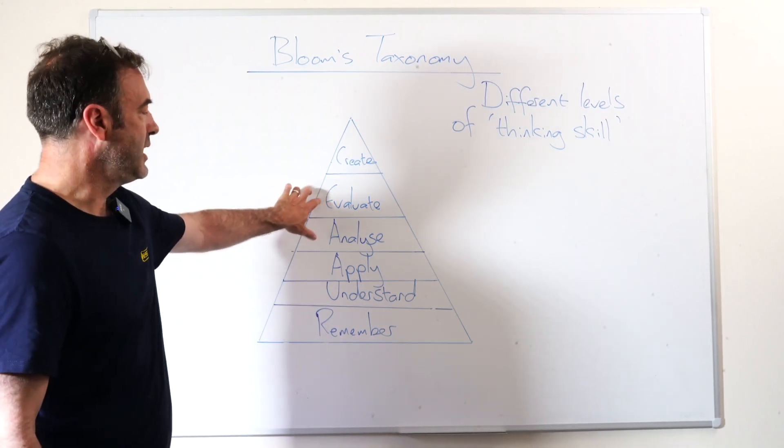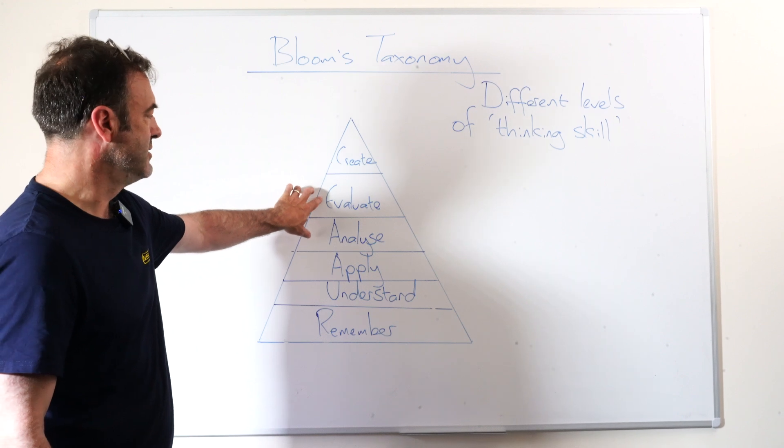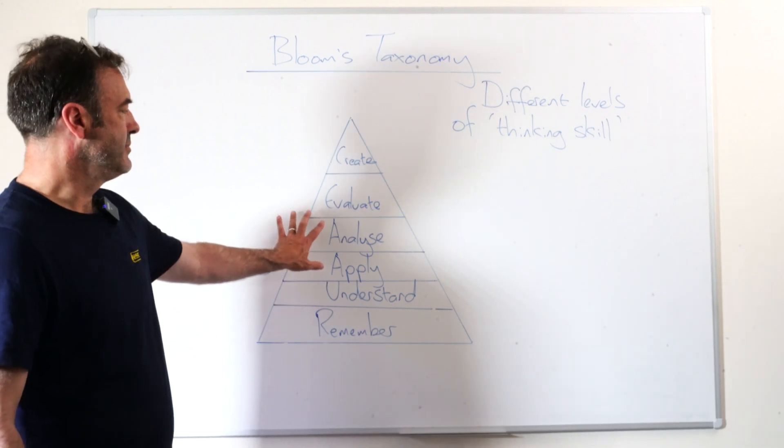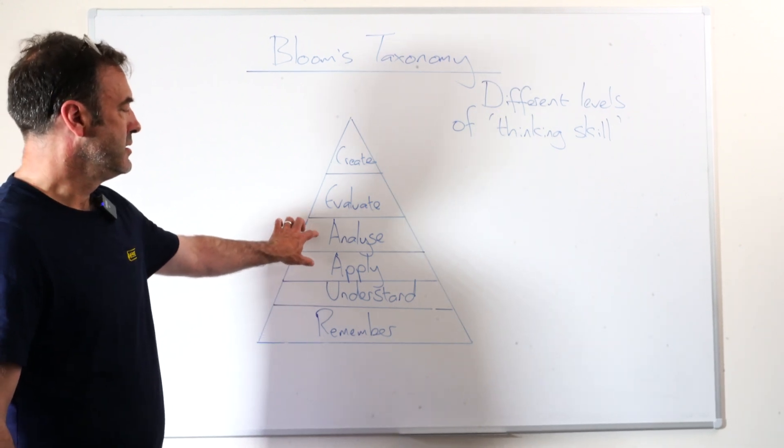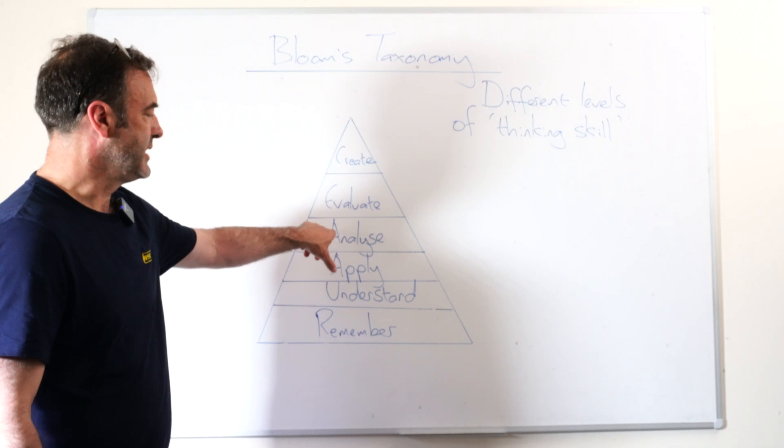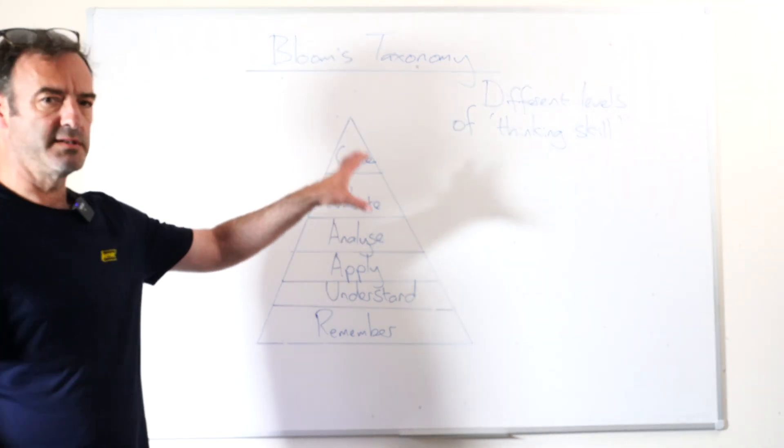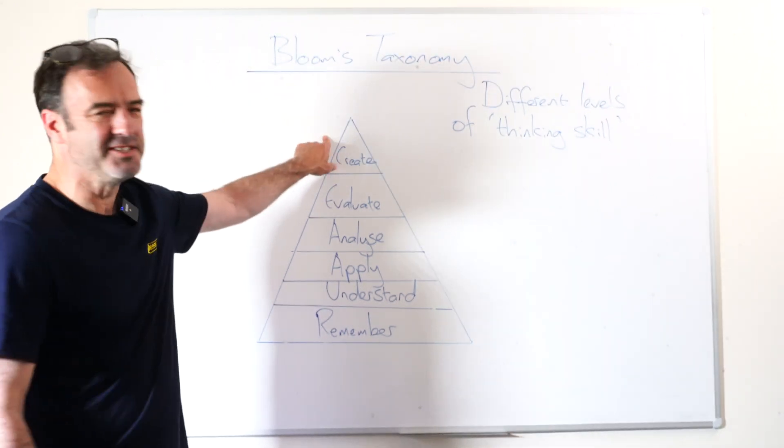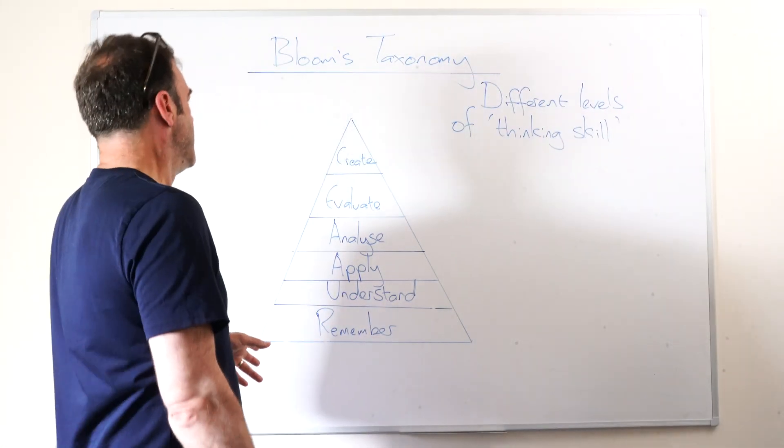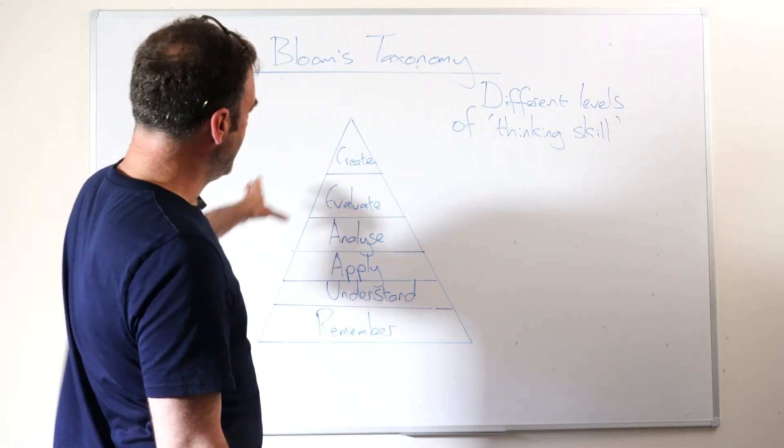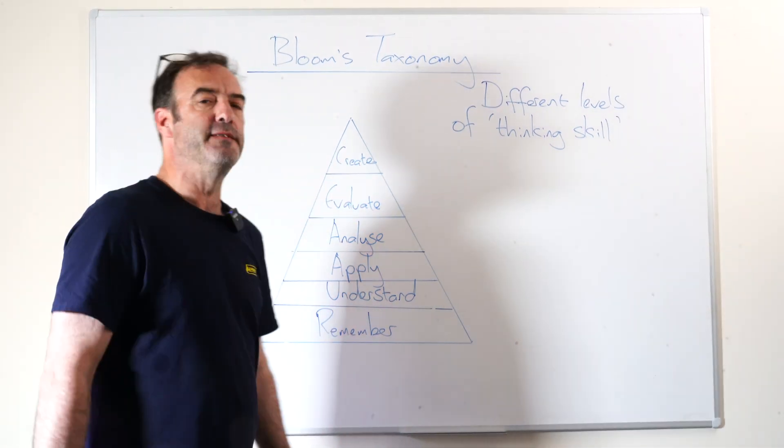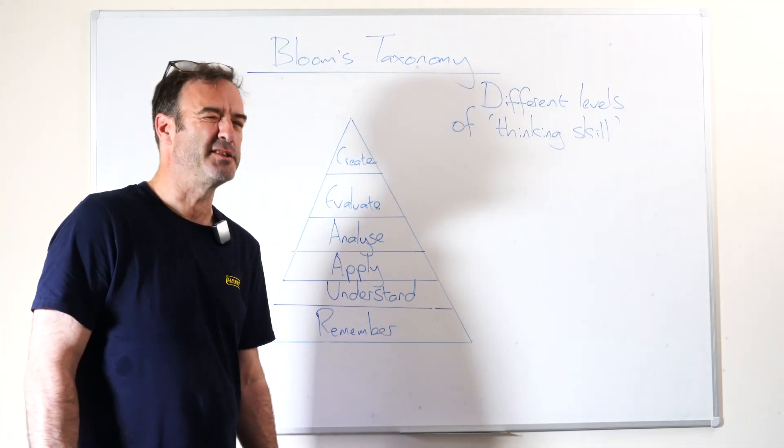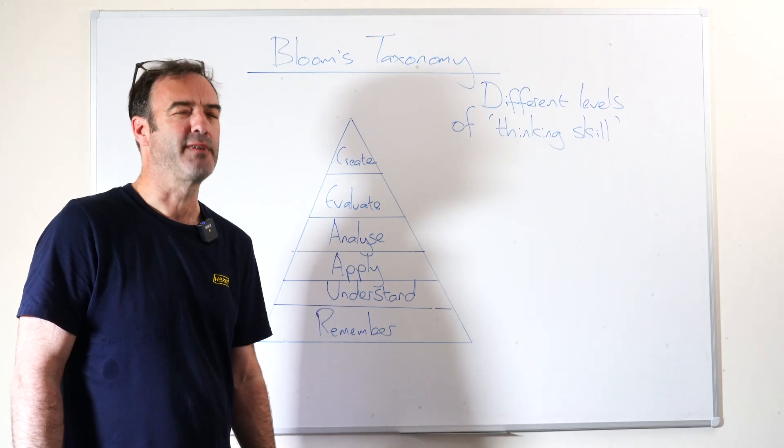Evaluate is a higher level still. You're taking information, not only analyzing it and looking for trends, but you're really drawing conclusions from it. Create is right at the top. I would say this is obviously to do with creative writing, where you're taking all the skills you've learned so far and applying them to your own piece of writing, as much as a ten-year-old can at that point.